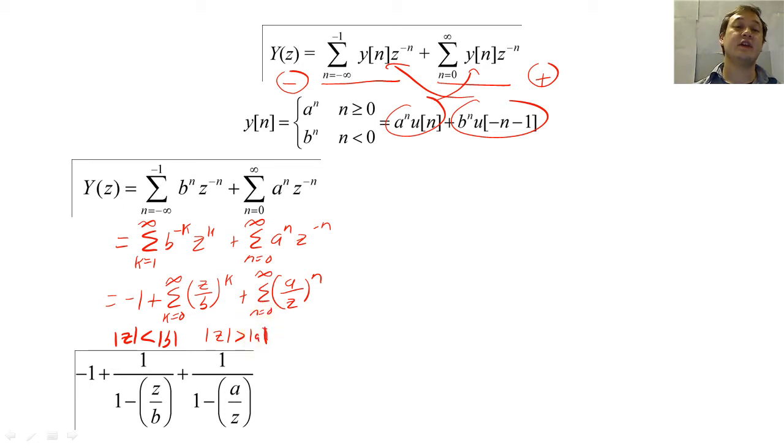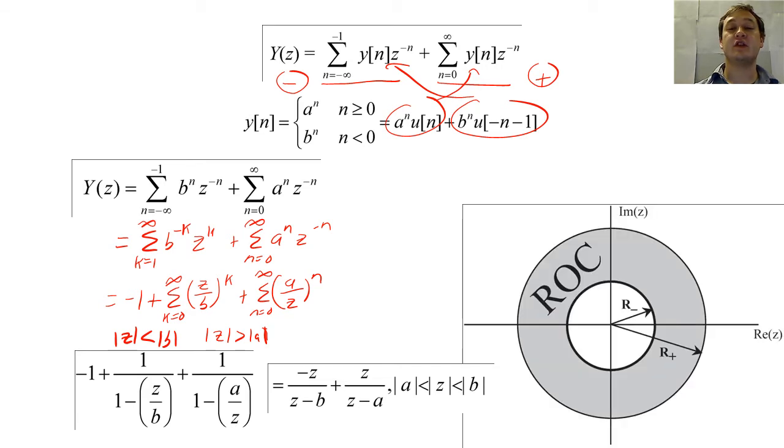With some mildly creative math, we can simplify Y of Z to this form. Based on this equation, we find that the ROC will look like a ring.